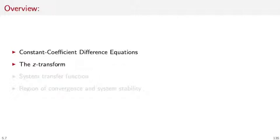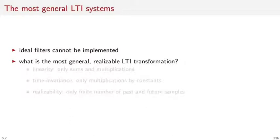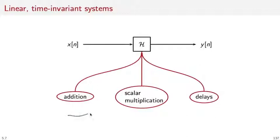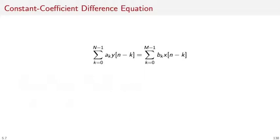With the Z-Transform it will be very easy to derive system transfer functions, and from the system transfer function we will know whether a system is stable or not. Ideal filters cannot be implemented in practice, so the natural question is: what is the most general realizable LTI transformation? Linearity implies we only use sums and multiplications, time invariance implies we only use multiplications by constants, and realizability implies we only use a finite number of past and future samples. Under this hypothesis, we can always express the input-output relationship as a linear combination of output samples equal to a linear combination of input samples.